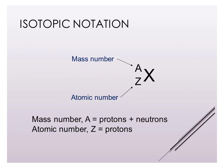Just a quick review of isotopic notation. We have our symbol X, which represents any element. The number A is our mass number, which includes both the number of protons and the number of neutrons — the total of those two values. And then we have the atomic number Z, which is the number of protons, and it's that number that determines the identity of the element.